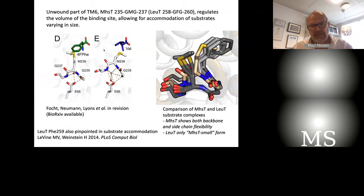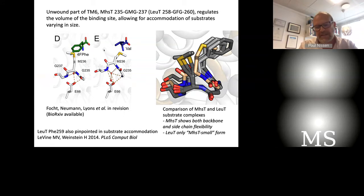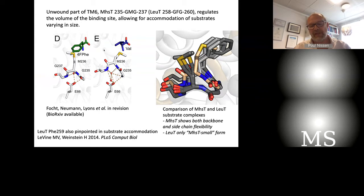This was also seen for LeuT, with variations of course. But comparing the variations between LeuT and MHST, we could see that with LeuT it's really about a central amino acid forming part of the substrate binding pocket — side chain movements accommodate different substrates. Whereas with MHST, we see not only side chain movements but also a main chain flip, so it can actually be in two modes: a small mode for branched aliphatic amino acids, and a big mode for the aromatic substrates. LeuT can only adopt what is quite similar to the small mode compared to MHST, which provides MHST with its broader range.